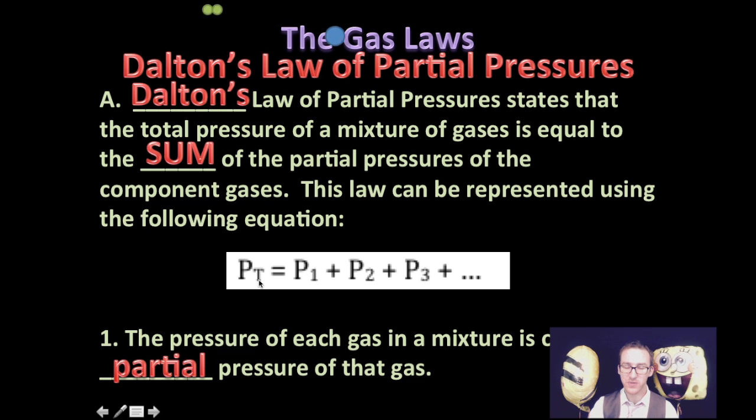Essentially, what this formula says is that the total pressure of a mixture of gases is equal to the partial pressure of the first gas plus the partial pressure of the second gas plus the partial pressure of the third gas plus the partial pressure of however many other gases you have.